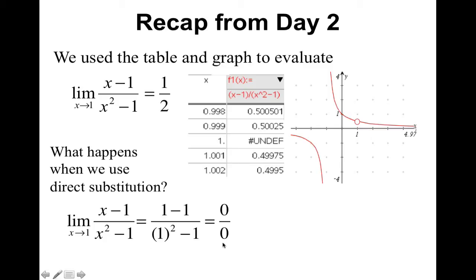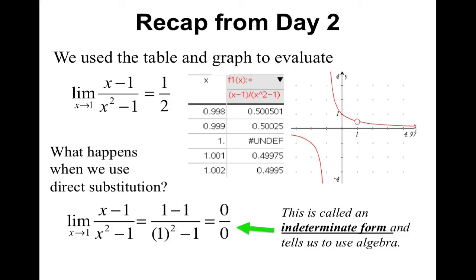What is zero over zero? Is it one, zero, or undefined? Well, if you're unsure, you would agree with the rest of the math world. We call this an indeterminate form. And every time you get something like zero over zero, this tells you you have to do some type of algebra to this limit to get to the one half that we know is the correct answer.